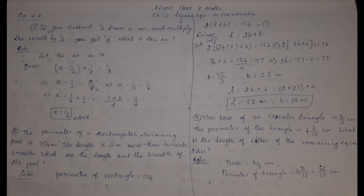Given, length is 2 metres more than twice its breadth, so L = 2B + 2. Substituting into 2(L + B) = 154, we get 2(3B + 2) = 154, so 3B + 2 = 77. Solving, breadth is 25 metres and length is 52 metres.